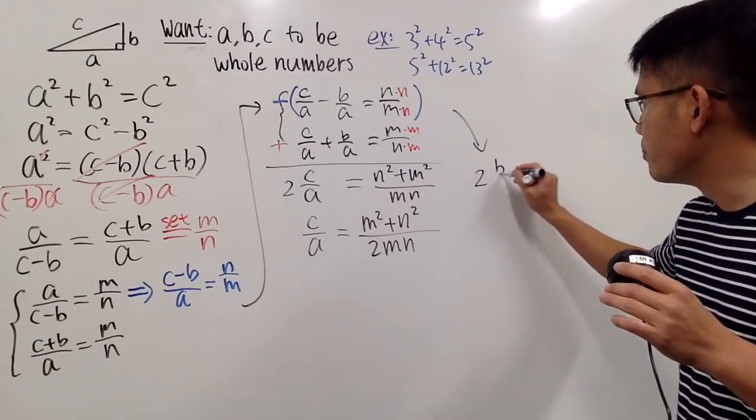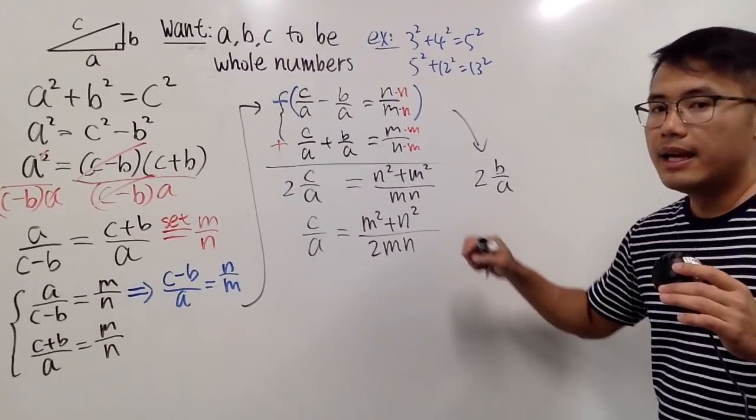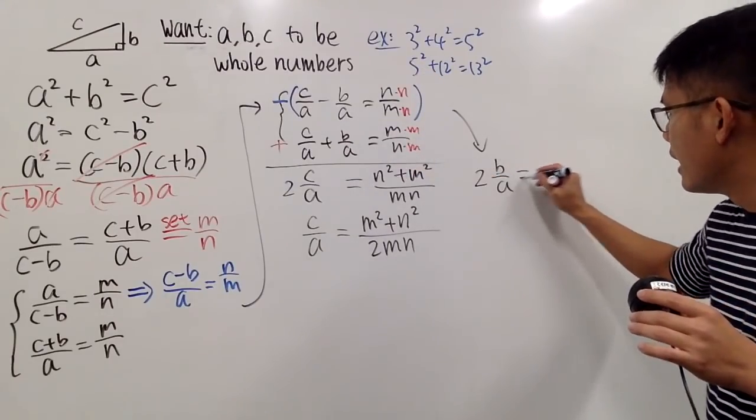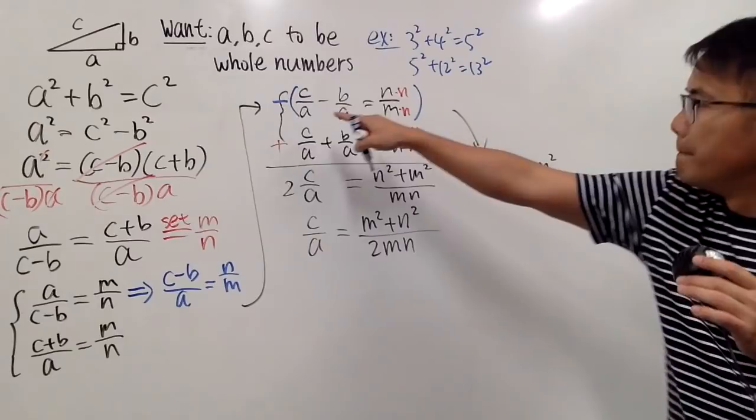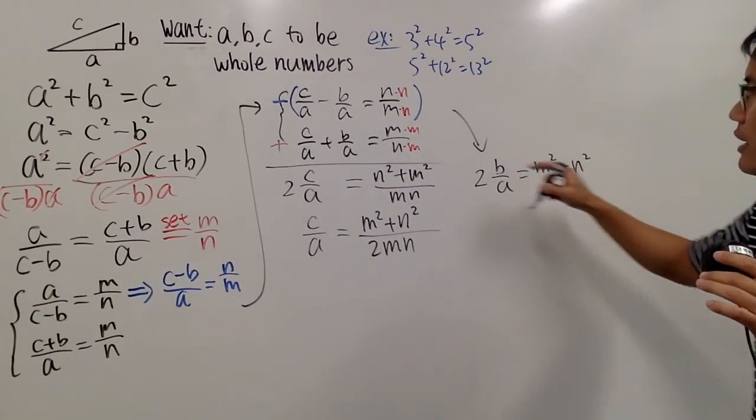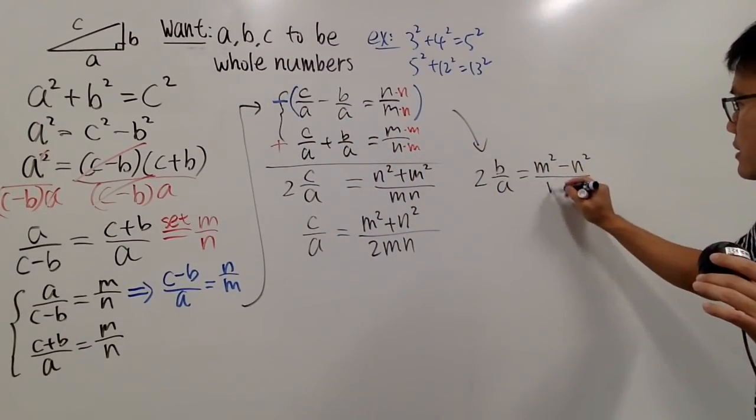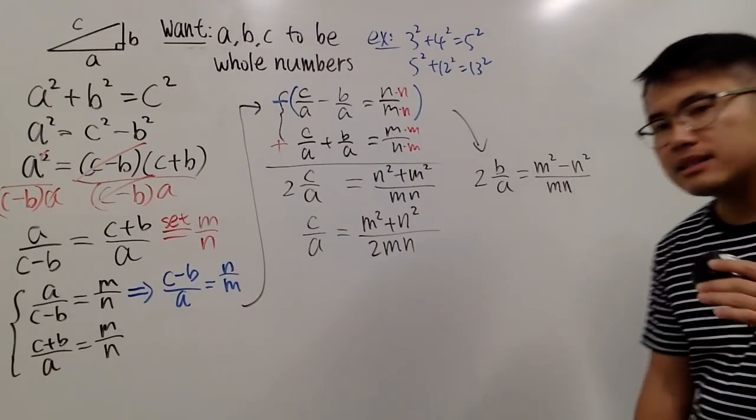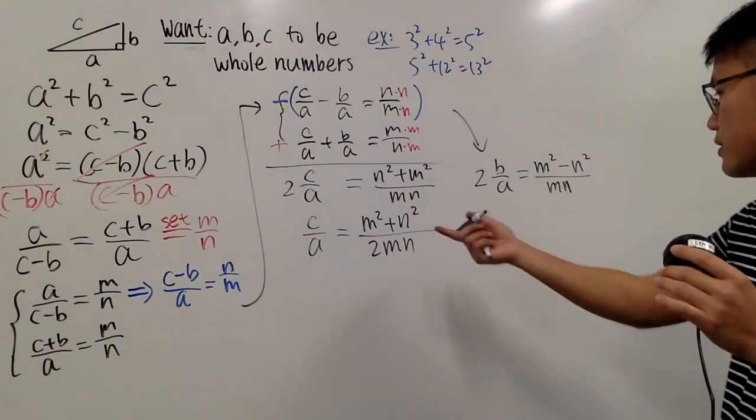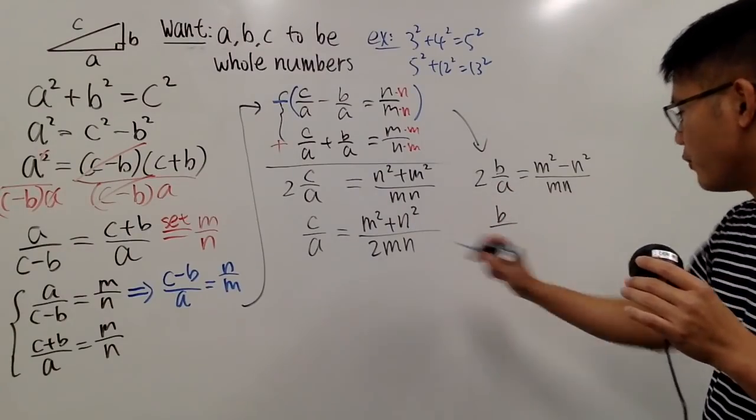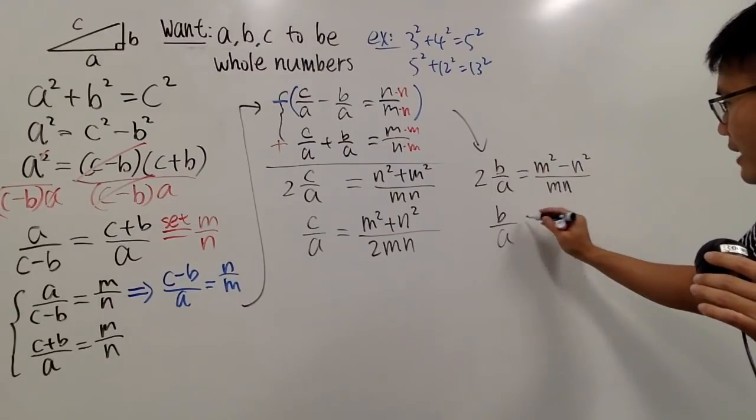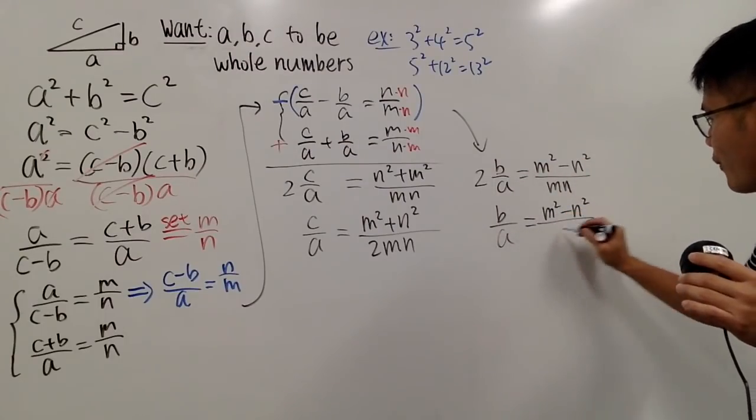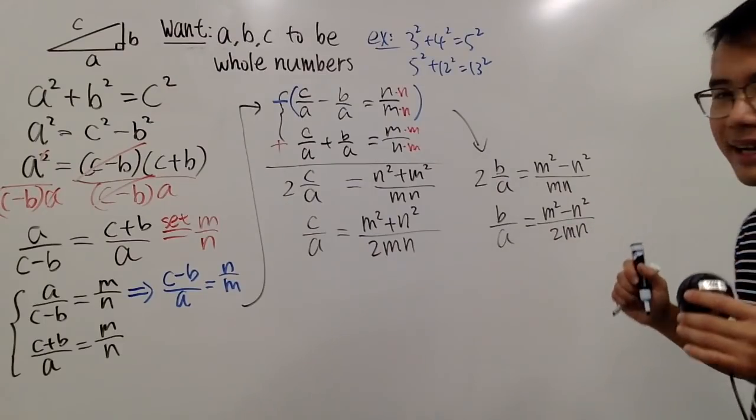And then this minus minus becomes plus, so I'll end up with 2B over A. This time, we are doing this minus that. So we will have M squared minus N squared, and then on the denominator, it's still MN, like this. And lastly, of course, let's divide the 2 on both sides, so we will actually have similar form to that. Finally, we have B over A equals to M squared minus N squared over 2MN, like this.